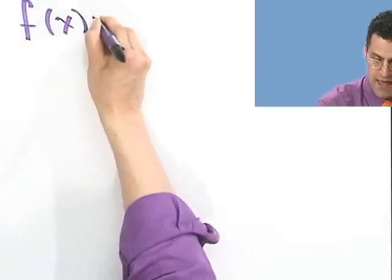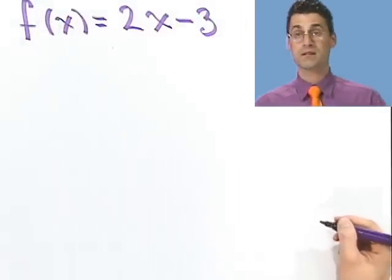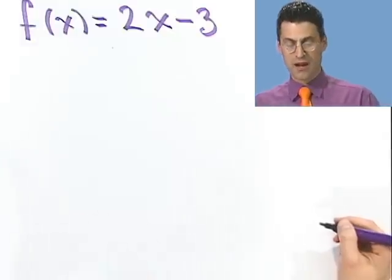So let's suppose I have a function f(x), and it equals 2x minus 3. Okay, now what I want to do is I want to find a function that untangles that. So what would I do? Well, for example, let's just look at some examples here.